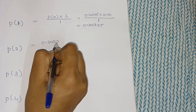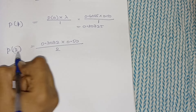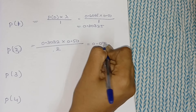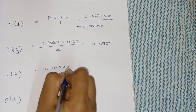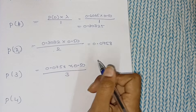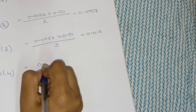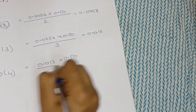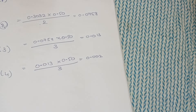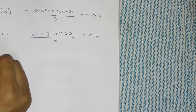Continuing: P(2) = P(1) × lambda ÷ 2 = 0.30325 × 0.50 ÷ 2 = 0.0758. P(3) = 0.0758 × 0.50 ÷ 3 = 0.013. P(4) = 0.013 × 0.50 ÷ 4 = 0.002. Like that, for however many x values you have, you continue this recursive formula. This completes step 2.